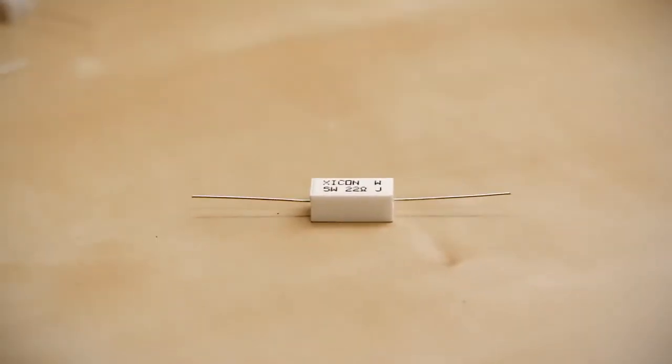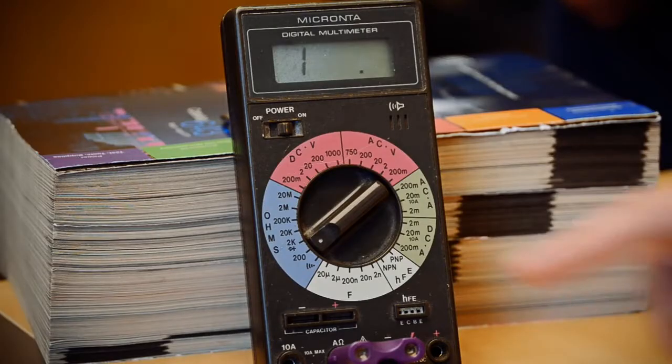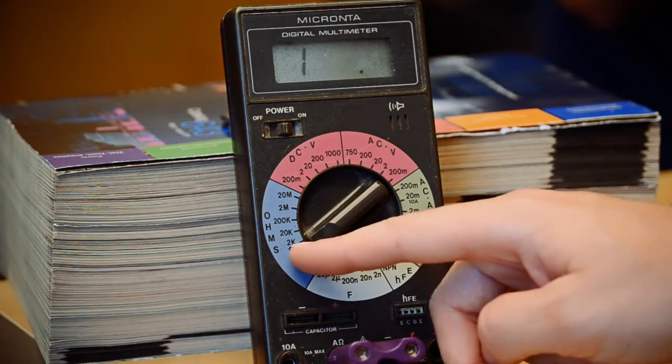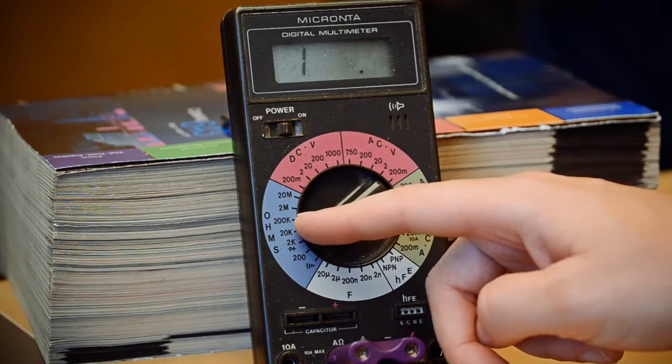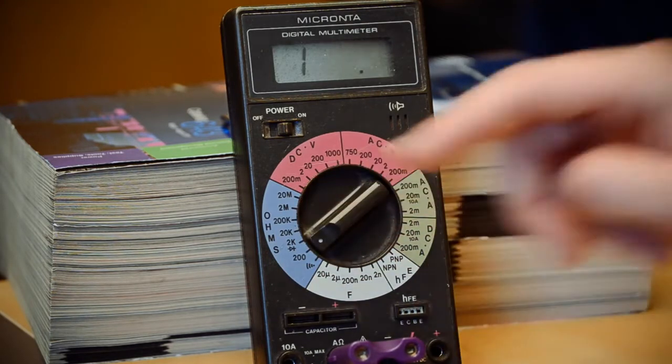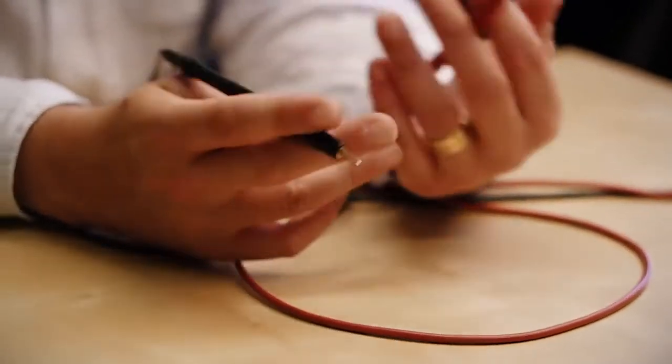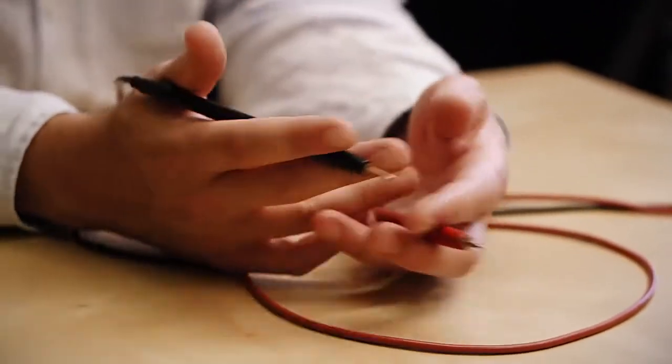When you're measuring a 22-ohm resistor, this is marked 22 and then the omega. When looking at the ranges, this meter has the ranges of 200, 2K, 20K, 200K, 2 megaohms, and 20 megaohms. You always want to measure in whatever range is higher than what you're expecting.